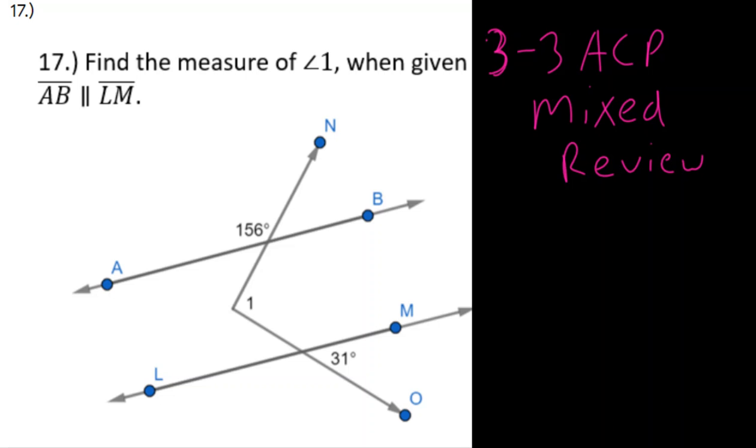Alright, and welcome to the 3-3 ACP Mixed Review. Now number 17 says this: find the measure of angle 1 when given AB is parallel to LM. Now what are we going to do here? Well we know we have AB parallel to LM, and we have two kind of broken transversals. Well, what we always want to do is we want to draw our auxiliary line, and remember our auxiliary line will actually be parallel as well to AB and LM.